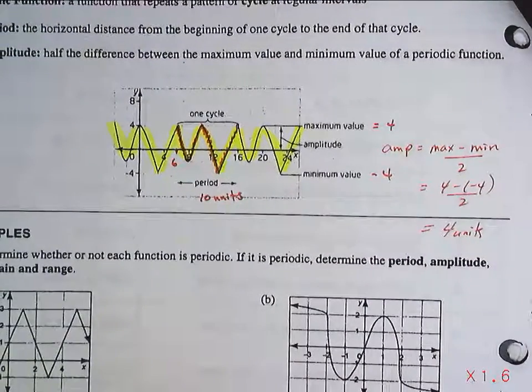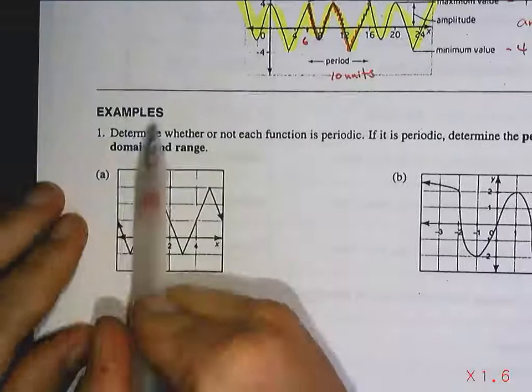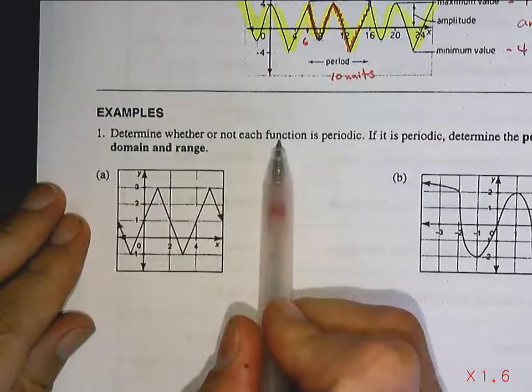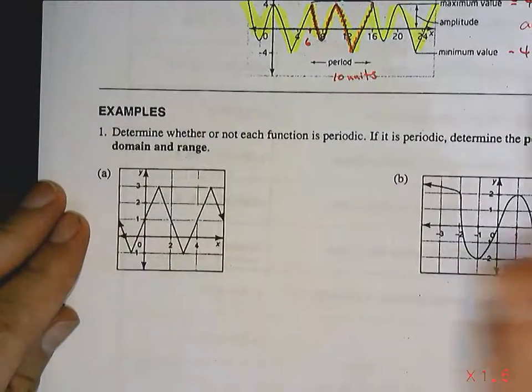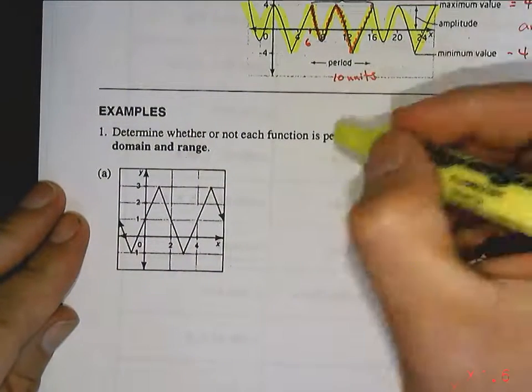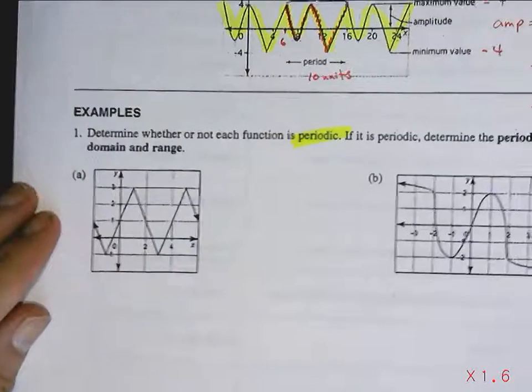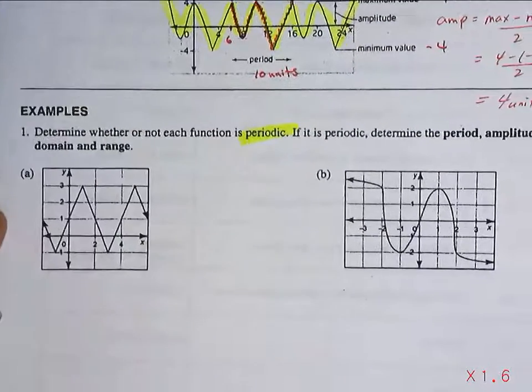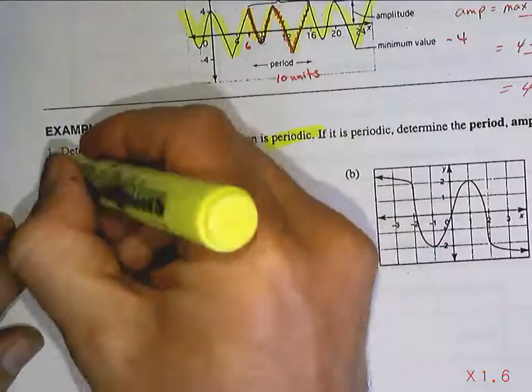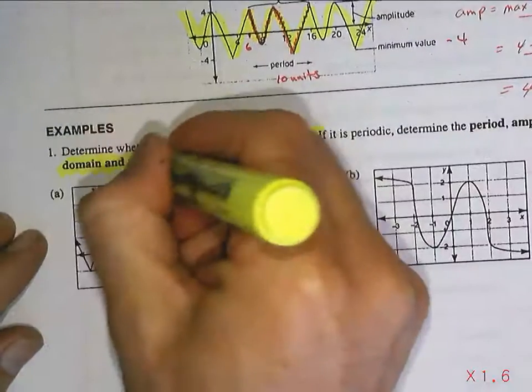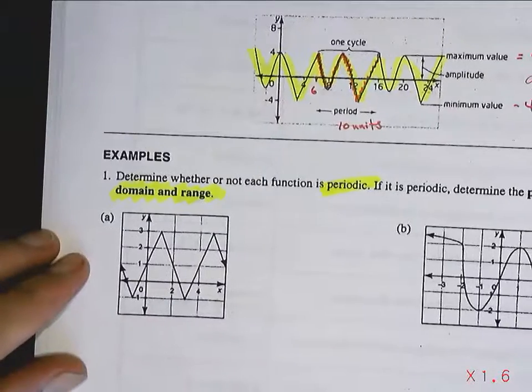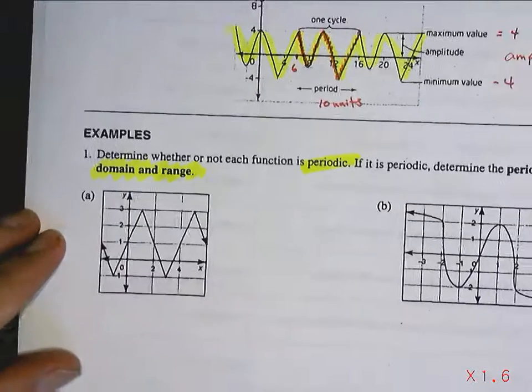Okay, so let's look at some examples. Determine whether or not each function is periodic. So that's the first question. Is it going to be periodic? Second, if it is periodic, then determine the period, the amplitude, and here's something left over from last unit, domain and range. So we're going to have to talk about that as well. All right. So look at this function.